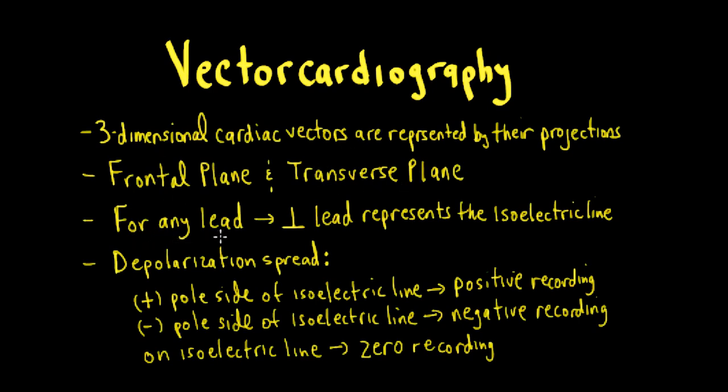So for any given lead, the perpendicular lead represents the isoelectric line. As depolarization spreads towards the positive pole side of the isoelectric line, that's a positive recording. If the depolarization spreads on the negative pole side of the isoelectric line, that's a negative recording. And if we're on the isoelectric line, then it's zero.